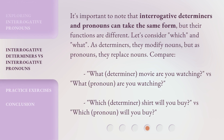It's important to note that interrogative determiners and pronouns can take the same form, but their functions are different. Let's consider 'which' and 'what'. As determiners, they modify nouns, but as pronouns, they replace nouns. Compare: 'What' (determiner) — 'What movie are you watching?' versus 'What' (pronoun) — 'What are you watching?' And 'Which' (determiner) — 'Which shirt will you buy?' versus 'Which' (pronoun) — 'Which will you buy?'